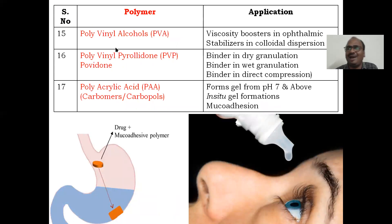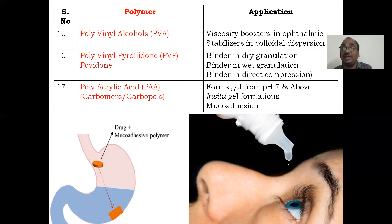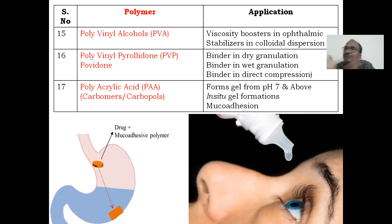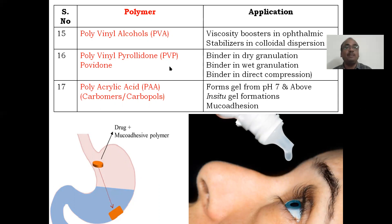Next polymers: polyvinyl alcohol (PVA), polyvinyl pyrrolidone (PVP), and polyacrylic acid (also called carbomers or Carbopol). PVA is used as a viscosity booster in ophthalmic solutions — if an eye drop is too watery it flows away, so you increase the viscosity so one drop instilled stays on the eye and cannot flow away. PVP is used as a binder in dry granulation, wet granulation, and direct compression methods — PVP is very popular.